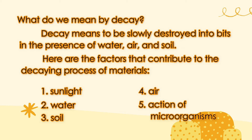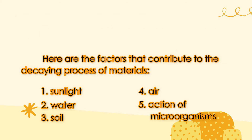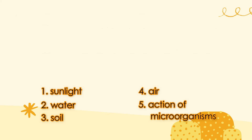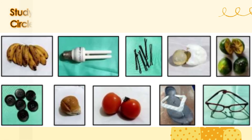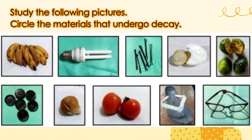Plants and animals are the best examples of matter that undergo decay. But remember, not all plants and animals decay at the same time. Some plants and animals decay faster than others. Study the following pictures and circle the materials that undergo decay.